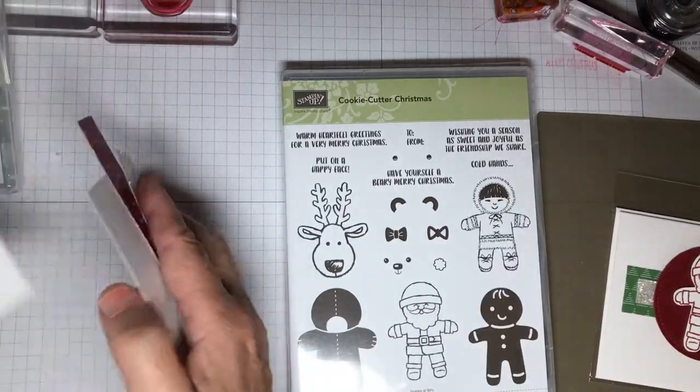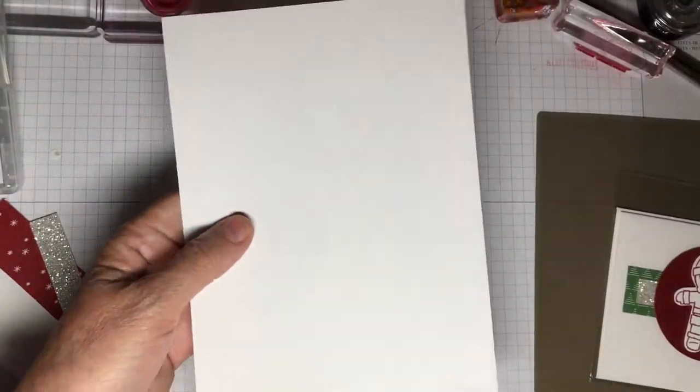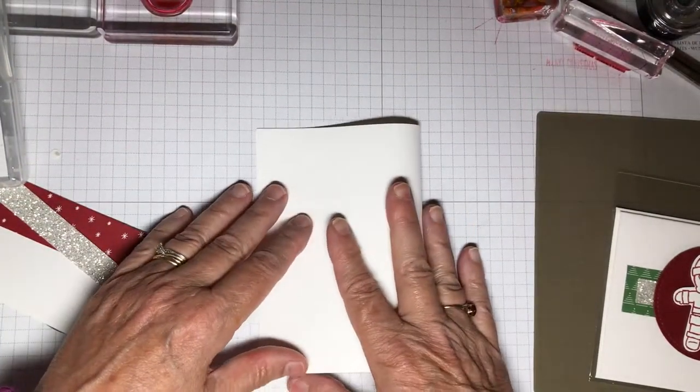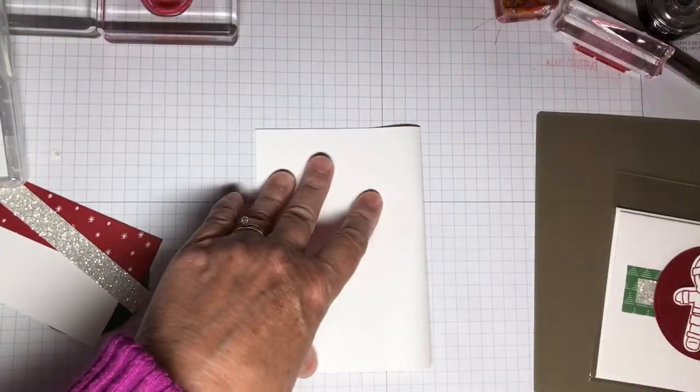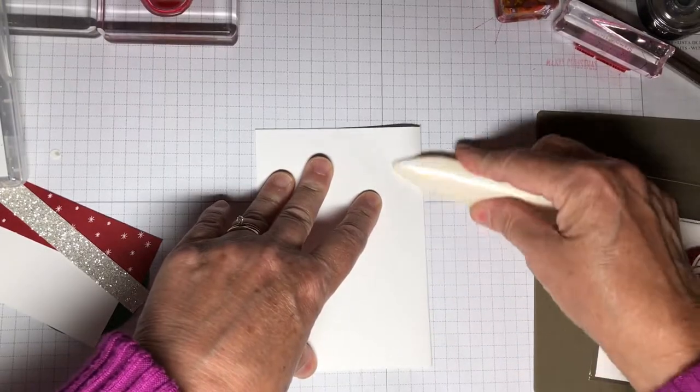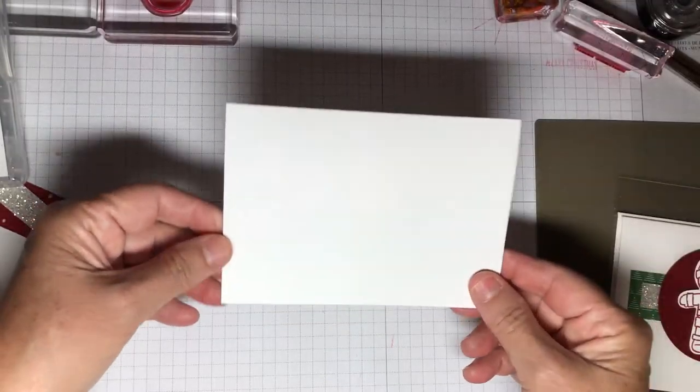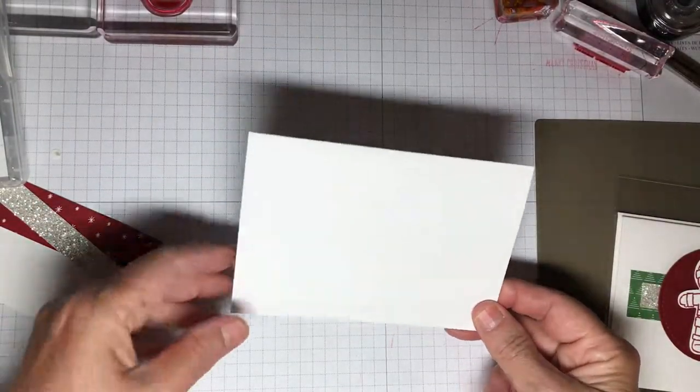I'm going to start with the whisper white note card here. These are three and a half by five inch cards that come with envelopes, so you don't have to buy the cardstock and the envelope separately, and you have the cardstock already pre-cut.